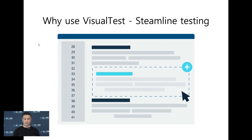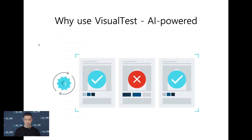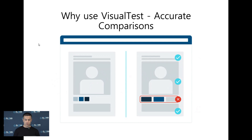SmartBear claims that Visual Test is very straightforward and can easily integrate into our functional UI testing. They also claim it's AI-powered, meaning it uses AI to detect visual changes such as changes in content, fonts, CSS, etc. They also claim that Visual Test gives very accurate comparison results, which we can see on the Visual Test dashboard.